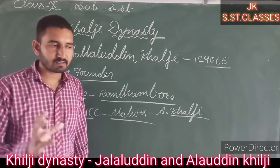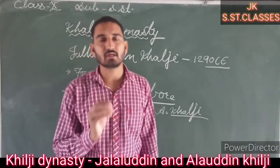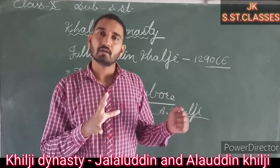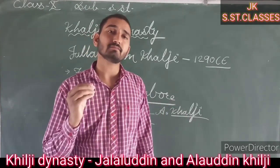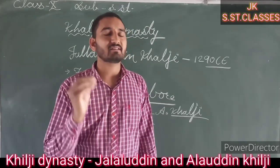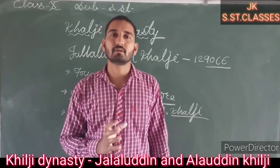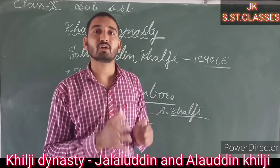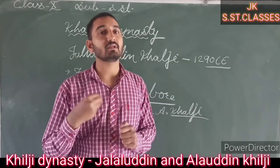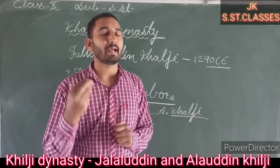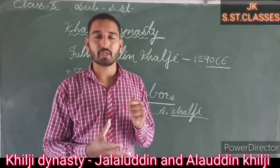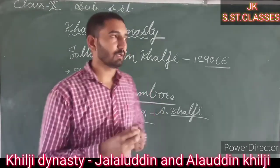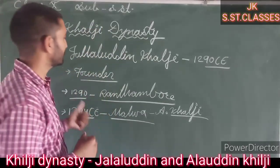Jalaluddin Khalji was a liberal absolutist ruler — he believed that the very existence of administration was in the public. Without the public, there was no administration. He believed in liberty. After the assassination of Jalaluddin Khalji, the next ruler of this dynasty was Alauddin Khalji.